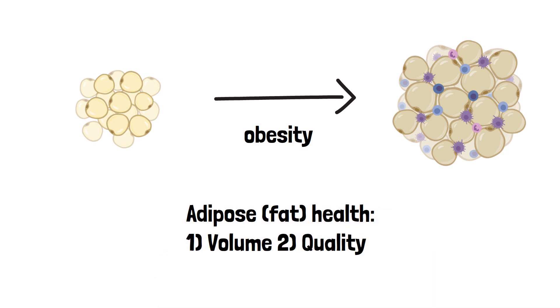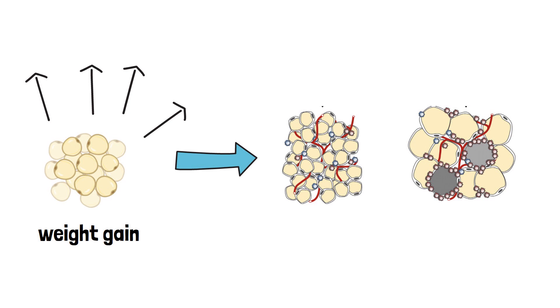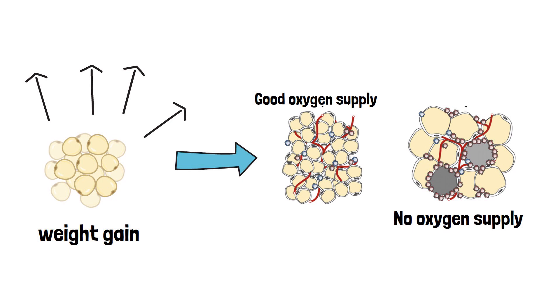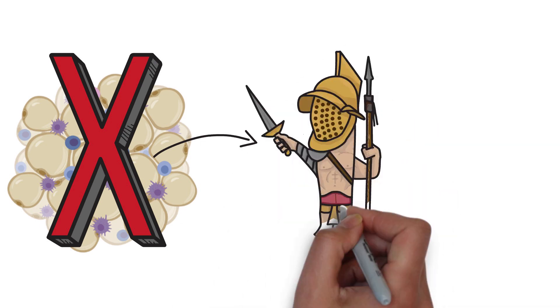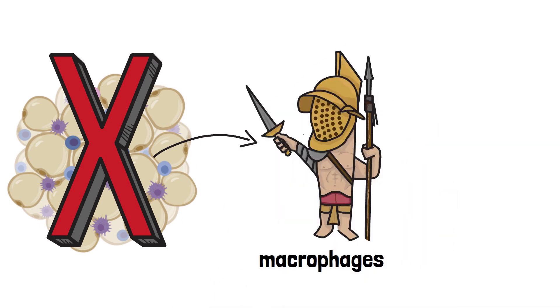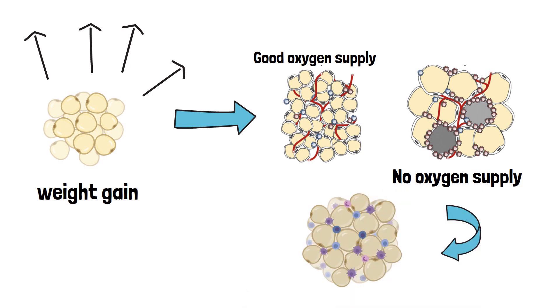During weight gain, adipocytes, also known as fat cells, get bigger. When adipocytes get bigger, the vessel surrounding the fat cell can't supply enough oxygen to the cell. Just like we die when we don't have enough oxygen, adipocytes also die when there's not enough oxygen. When an adipocyte dies, its inside spills out, which triggers immune warriors called macrophages to gather in the area, since they combat foreign substances. However, gathering of macrophages and their activity causes swelling, or inflammation. So to put it simply, obese individuals experience enlarged fat cells, which leads to a lack of oxygen and inflammation due to bursting from the death of adipocytes.